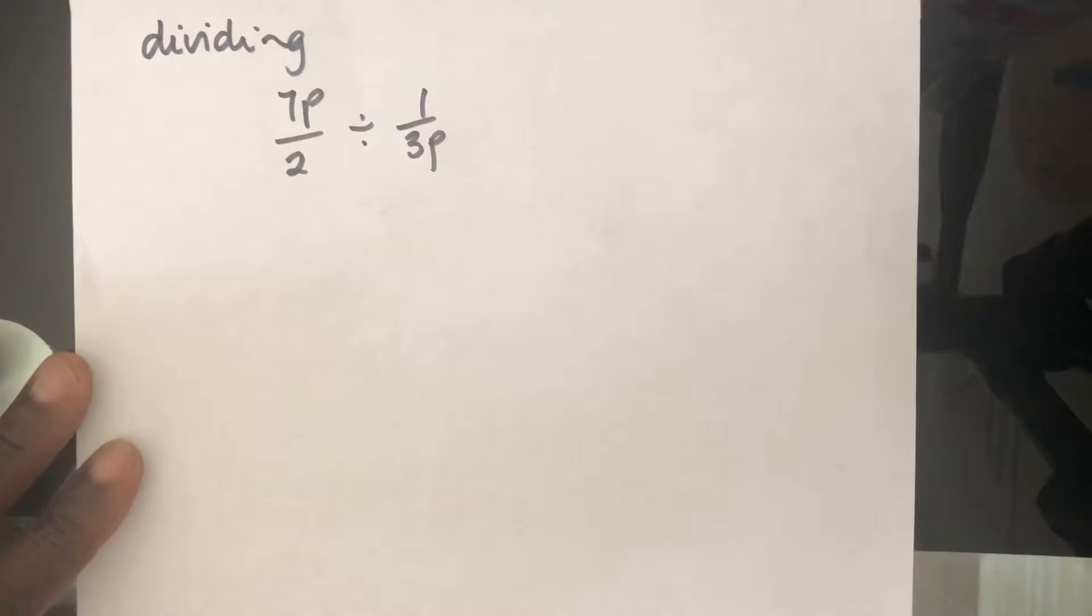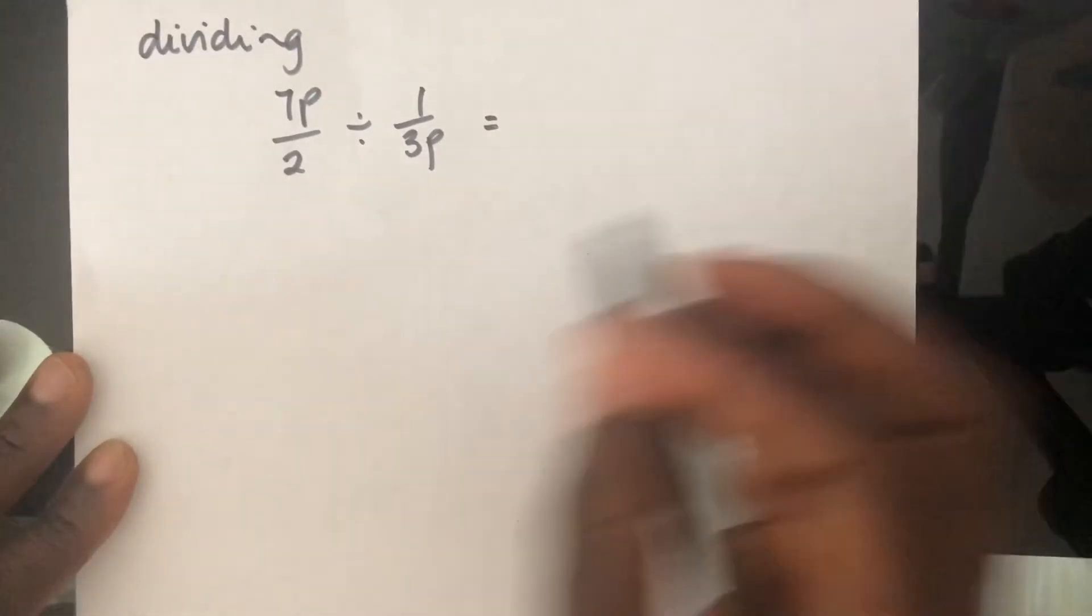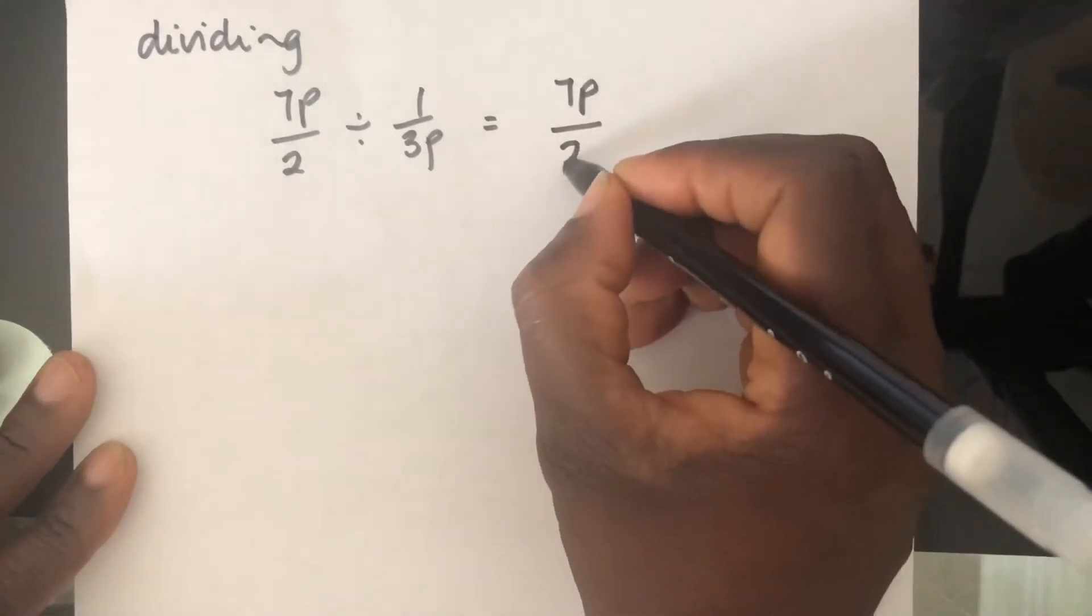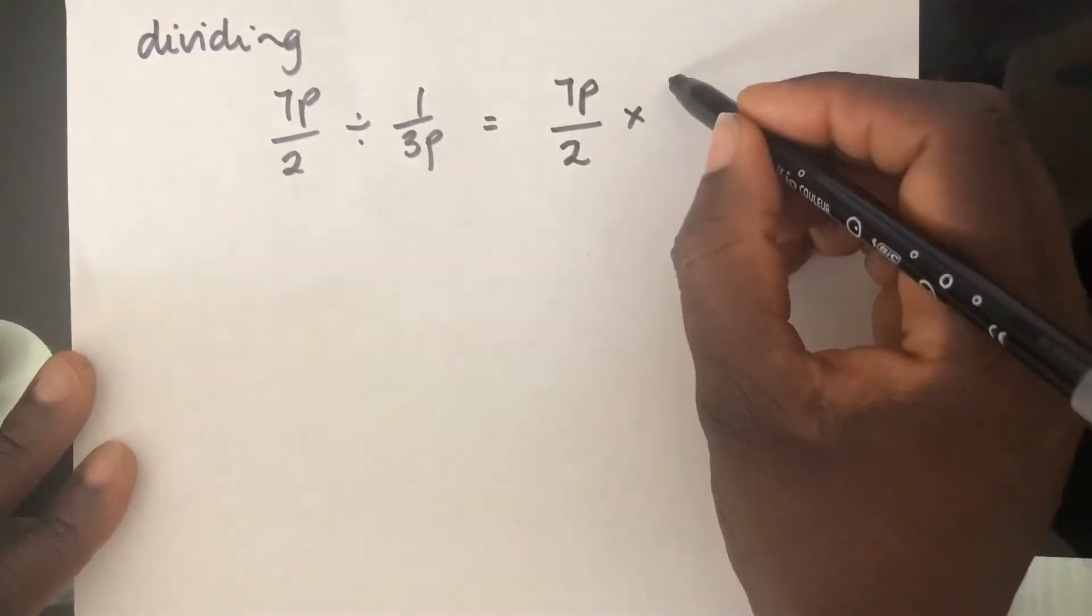A fraction is a fraction and it doesn't matter whether it's an algebraic fraction or a number fraction, we apply the same rules. When we divide fractions, we usually flip one of the fractions and use the multiplication sign to be able to work out the answer.